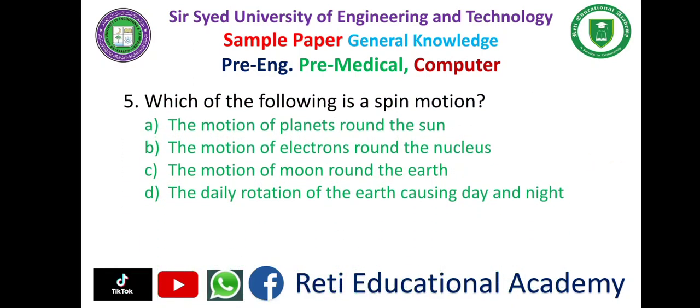Question number 5. Which of the following is spin motion? A. The motion of planets round the sun. B. The motion of electrons round the nucleus. C. The motion of moon round the earth. D. The daily rotation of the earth causing day and night. And the correct answer is D: the daily rotation of the earth causing day and night.